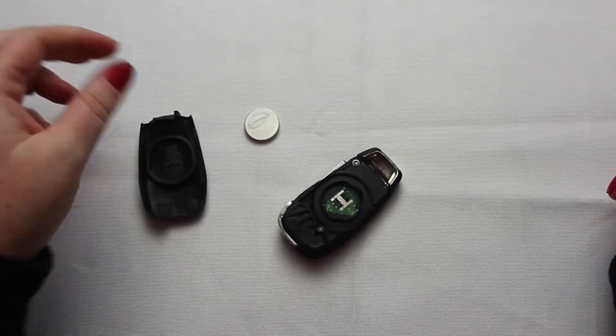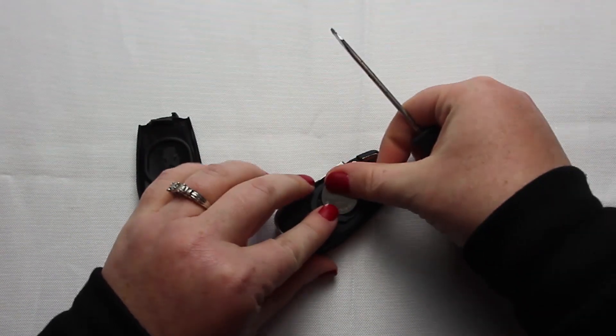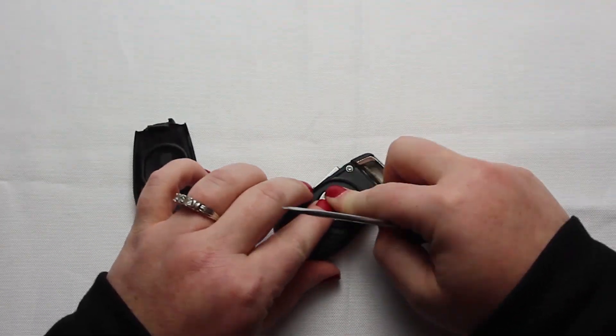Once you have the old battery out to replace it you slide the new battery in. With this key fob it is plus side up.